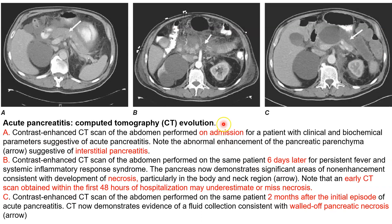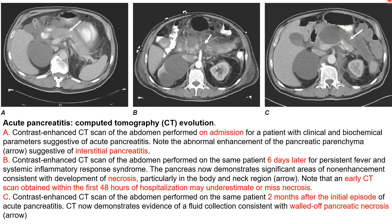Here we have a CT scan for a patient on admission showing abnormal enhancement of the pancreatic parenchyma, suggestive of interstitial pancreatitis. After six days a repeat CECT showed evidence of necrosis, with non-enhancement in the body and neck region consistent with necrotic change. The same patient came back after two months, and CECT showed fluid collection consistent with walled-off pancreatic necrosis.